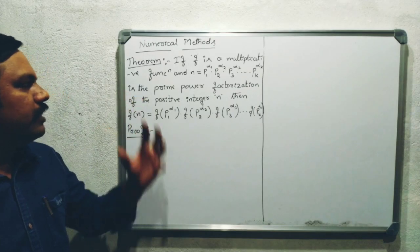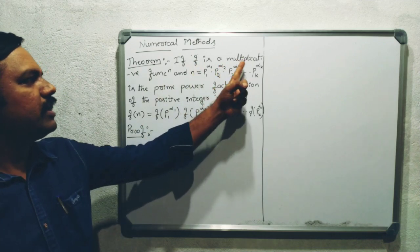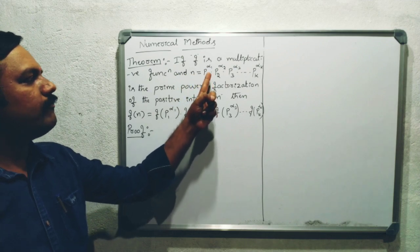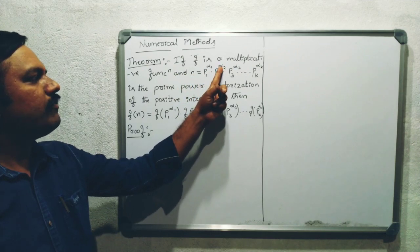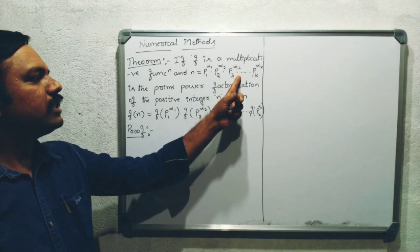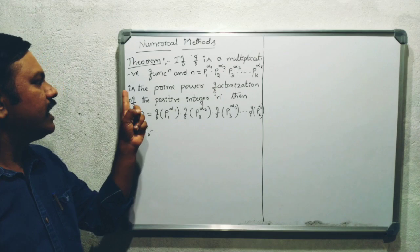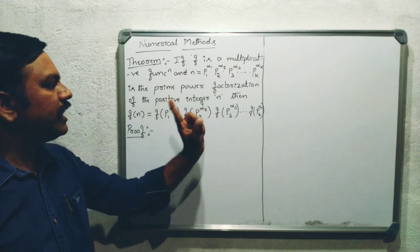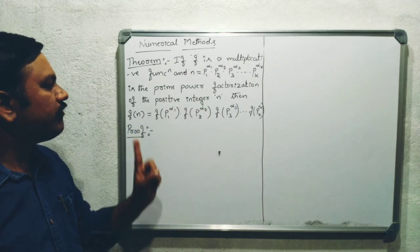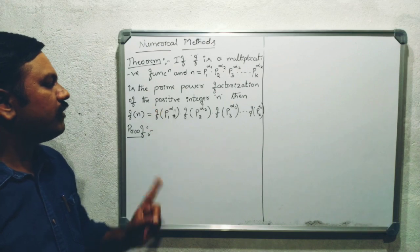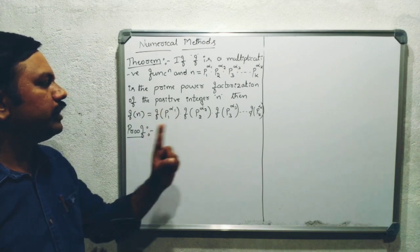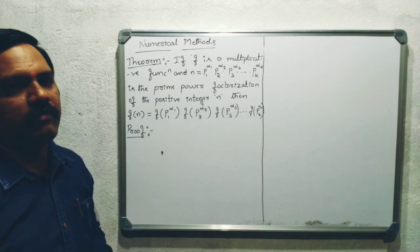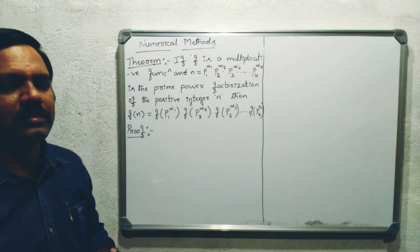If f is a multiplicative function and n is equal to p1 to the power of alpha 1, into p2 to the power of alpha 2, into p3 to the power of alpha 3, and so on, up to pk to the power of alpha k — that is the theorem statement.